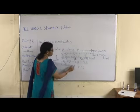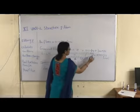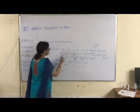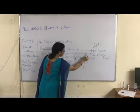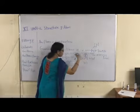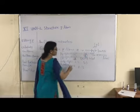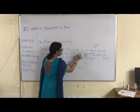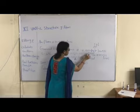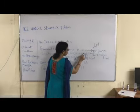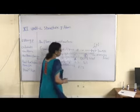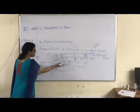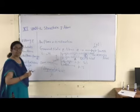At the fourth energy level (N shell), the subshells are 4S, 4P, 4D, and 4F. The F subshell starts from the fourth energy level. How many orbitals are present in the F subshell? Seven — 1, 2, 3, 4, 5, 6, 7. This arrangement of subshells in different energy levels gives us degenerate orbitals.